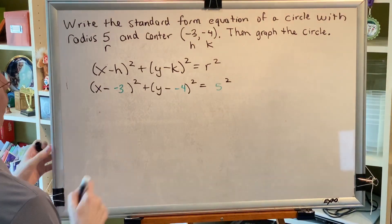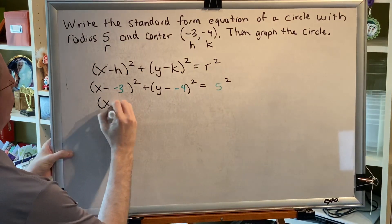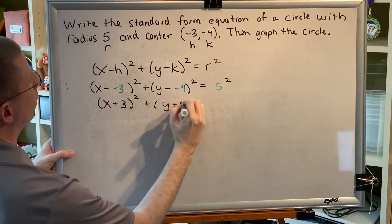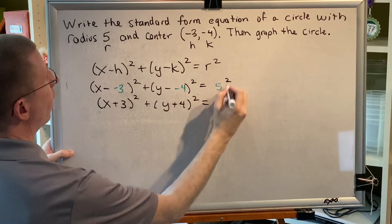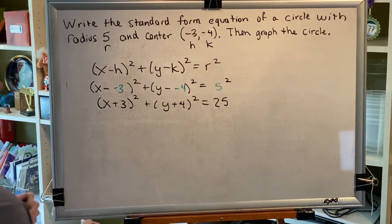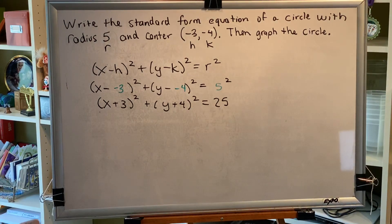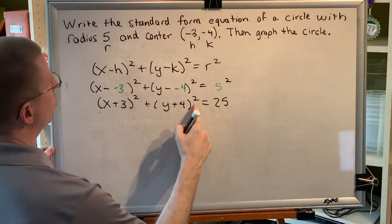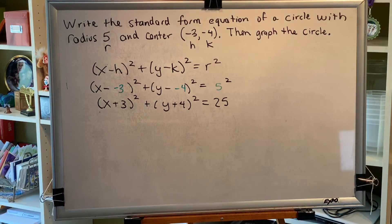All right, now we simplify. Subtracting negative is adding. We have two instances of that property. And five squared is 25. So the equation of our circle in standard form is (x + 3)² + (y + 4)² = 25.